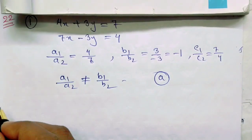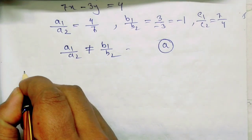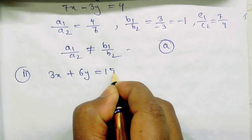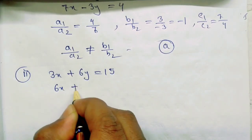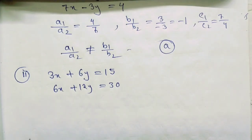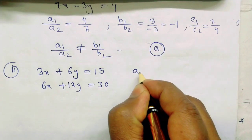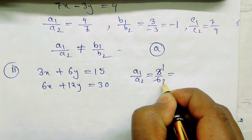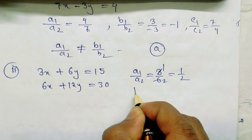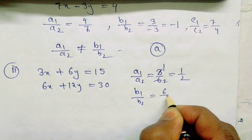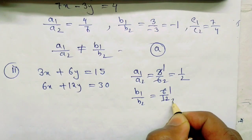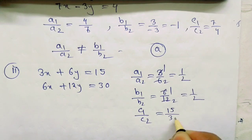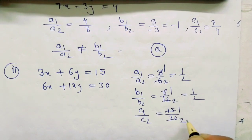So, we have 2 equations. We have 3x plus 6y is equal to 15, and we have 6x plus 12y is equal to 30. Since we have 3x plus 6y is equal to 12, which is equal to 12y is equal to 13.